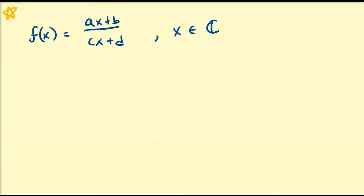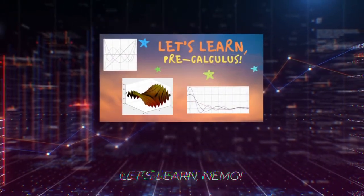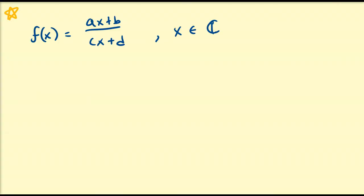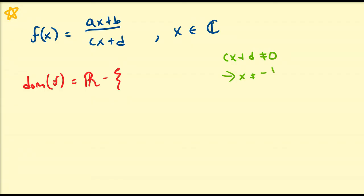We'll investigate a necessary and sufficient condition on the invertibility of this particular function. To begin, let's state a couple of obvious things about this function. First off, the domain of f is going to be the set of complex numbers except for one value that makes the denominator equal to zero. So we know that cx plus d cannot be equal to zero, meaning x cannot be equal to negative d divided by c. So negative d over c cannot be in the domain of this particular function.